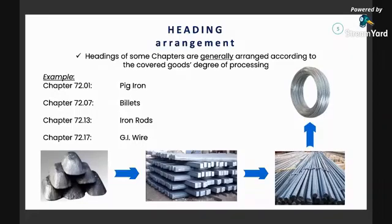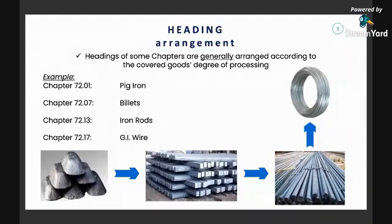This is not a chapter but rather heading 72.01, which describes pig iron. When you further process pig iron, you get billets, classifiable under 72.07. When billets are further processed, you get iron rods, classifiable under 72.13. And once iron rods are further processed, you get GI wire, classifiable under heading 72.17. So heading arrangements are also generally organized according to the degree of processing.